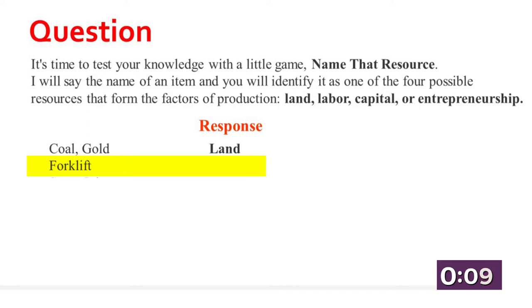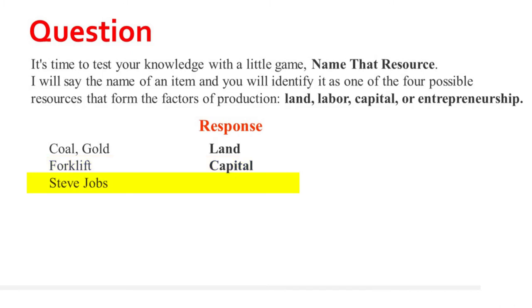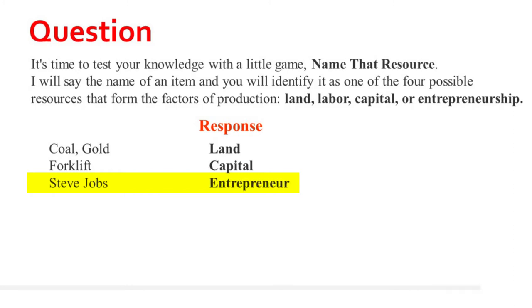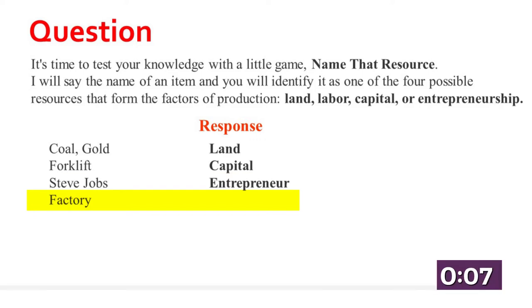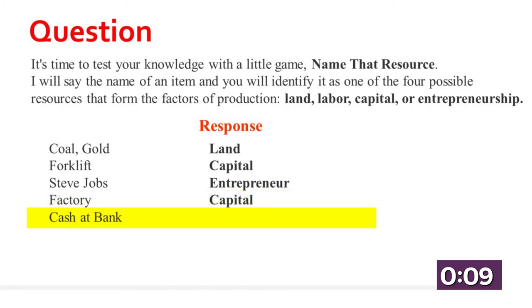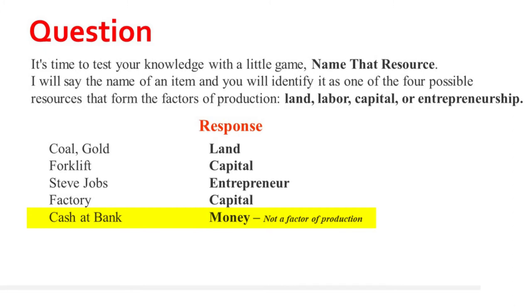A forklift — if you said capital, you are also correct. Steve Jobs — if you referred to him as an entrepreneur, that is correct. Factory — if you said capital, that is also correct. Cash at bank — that is money, and it is not a factor of production.